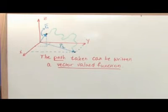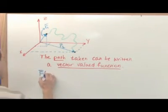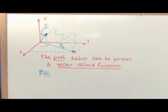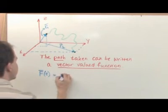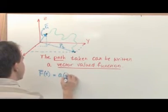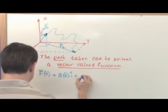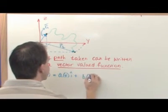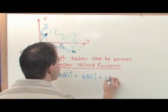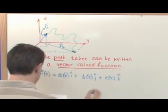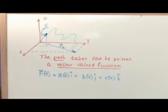So how would you write that? The vector-valued function would be written like this: vector f as a function of time, because we just said it was a function of time, is equal to some function of time in the i direction plus some function of time in the j direction plus some function of time in the k direction. So it looks complicated, but it really isn't that complicated when you think about it.